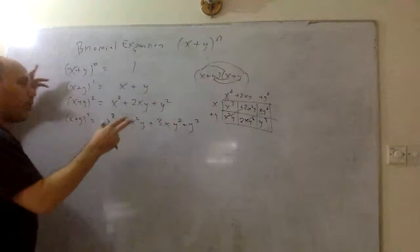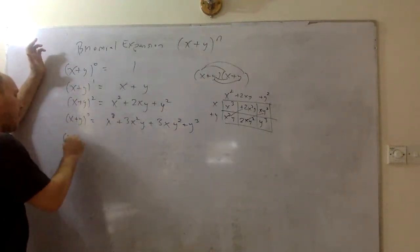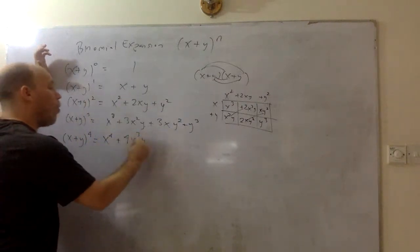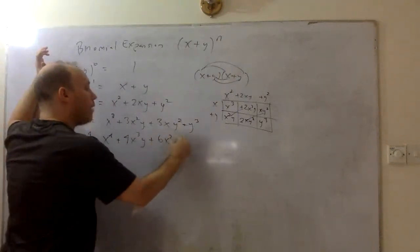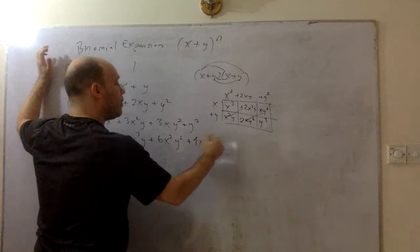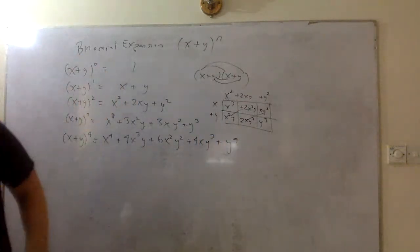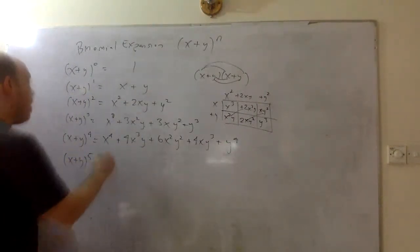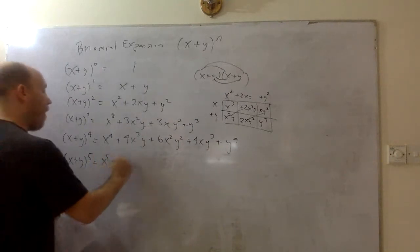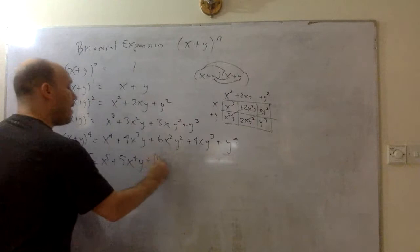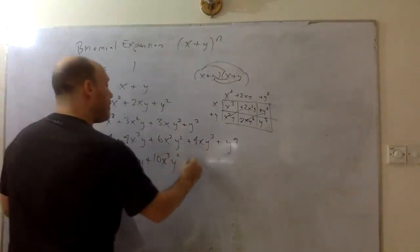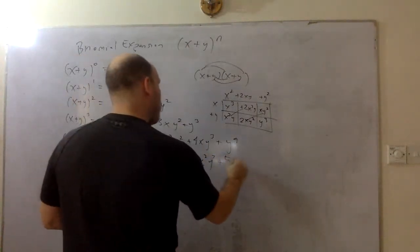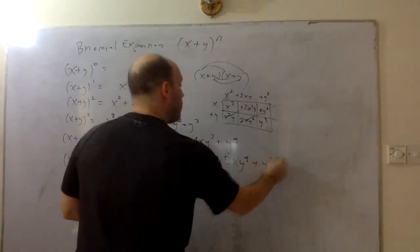We can do this again and again. x plus y to the fourth ends up being x to the fourth plus 4x cubed y plus 6x squared y squared plus 4xy cubed plus y to the fourth. And x plus y to the fifth: x to the fifth plus 5x to the fourth y plus 10x cubed y squared plus 10x squared y to the third plus 5xy to the fourth plus y to the fifth.